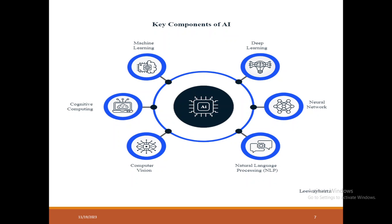Coming to the components — as I already mentioned, machine learning is the biggest foundation for AI. We have deep learning, we have neural networks which are a subset of deep learning, we have natural language processing. Nowadays Python has toolkits and libraries for NLP. We have computer vision, cognitive computing, robotics, and human-computer interaction.